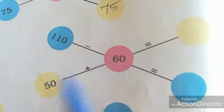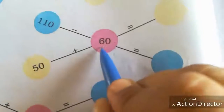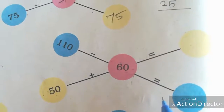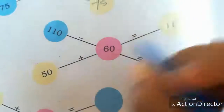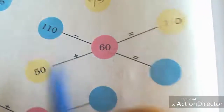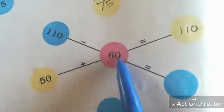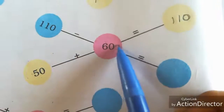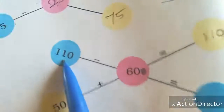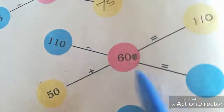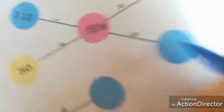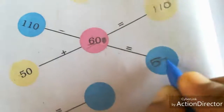Next, 50 plus 60. I already said in addition, you don't consider the zero — just consider 5 plus 6, that is 11. Then we add the zero. In multiplication we add all the zeros, but in addition, if there is one zero, you write one zero. So 11 becomes 110. Then 110 minus 60: don't consider the zero, just 11 minus 6 is 5, then add the remaining zero to get 50.